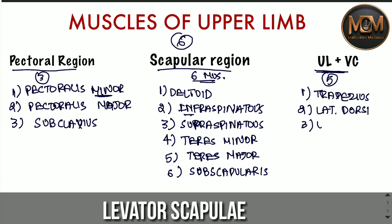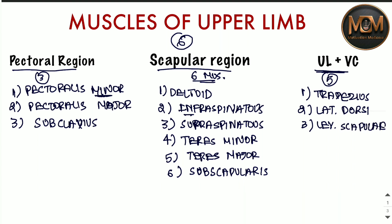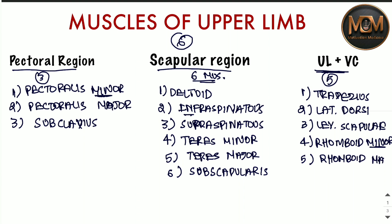The third muscle connecting the upper limb to the vertebral column is levator scapulae. The fourth one is rhomboid minor — and as before, if there is a minor there is a major — so the fifth one is rhomboid major. Those are the five muscles connecting the upper limb to the vertebral column.